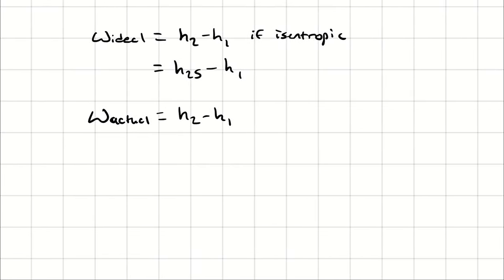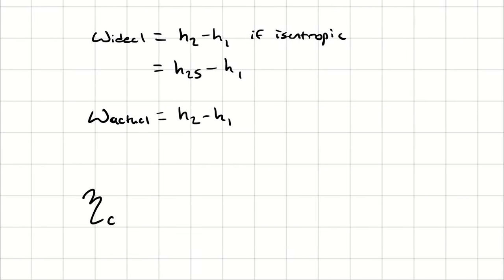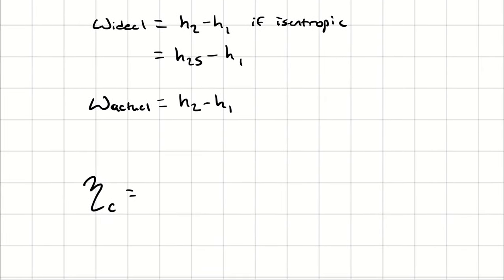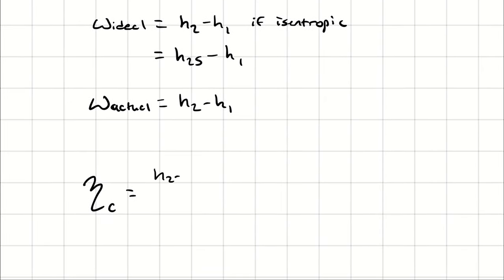When I talk about compressors, remember that I have the proportion of ideal work to actual work, which means that I'm writing this as H2S minus H1, divided by H2 minus H1.